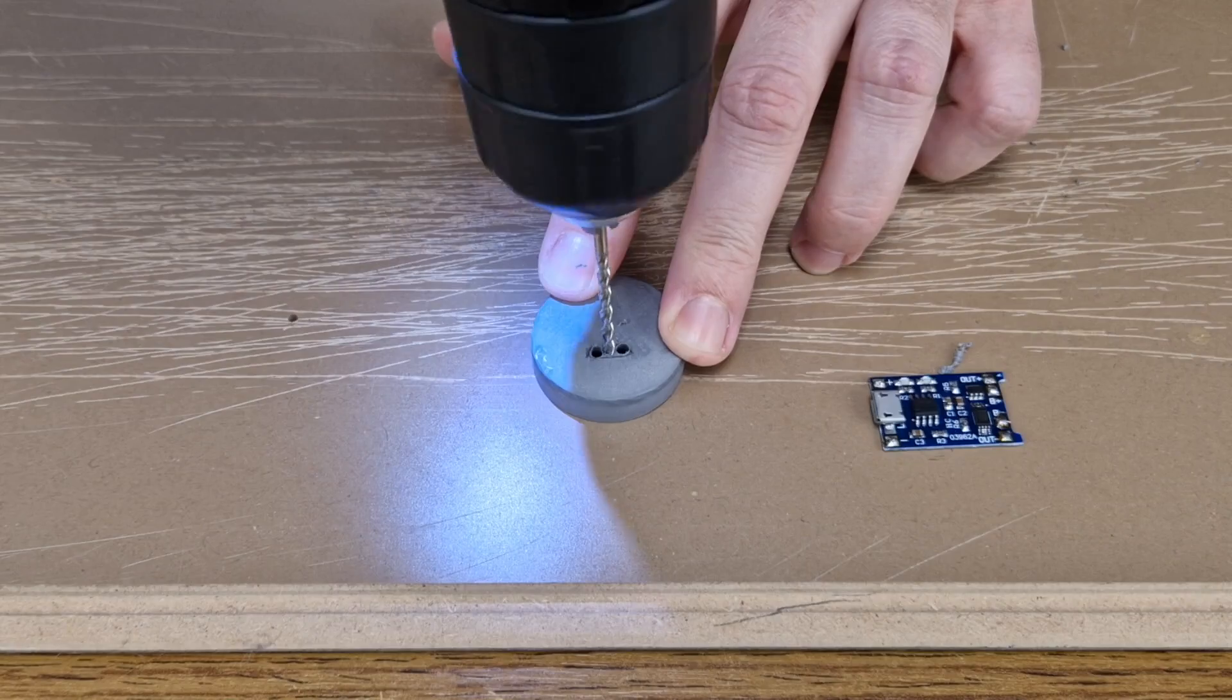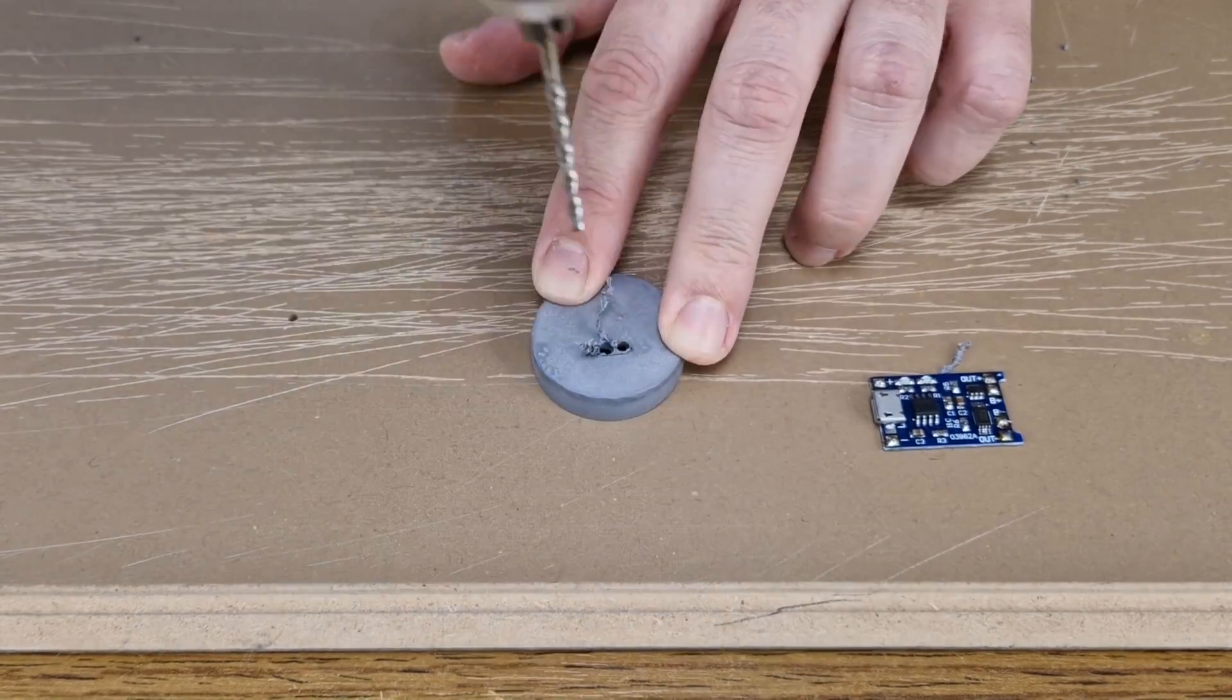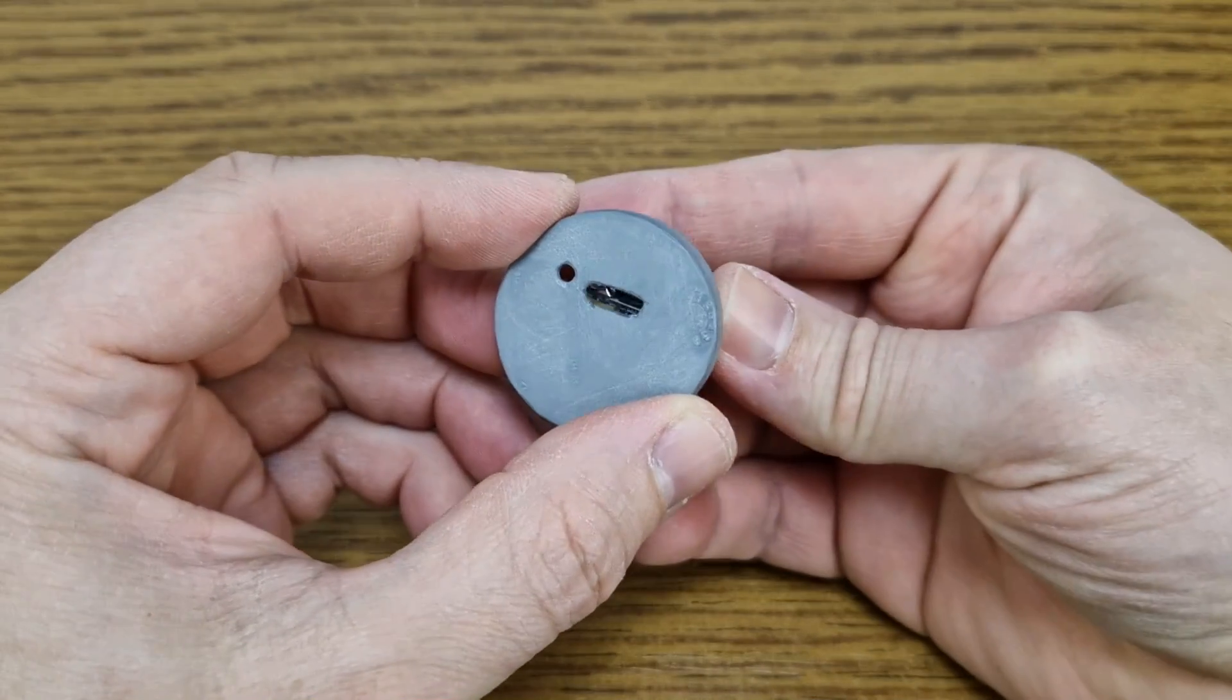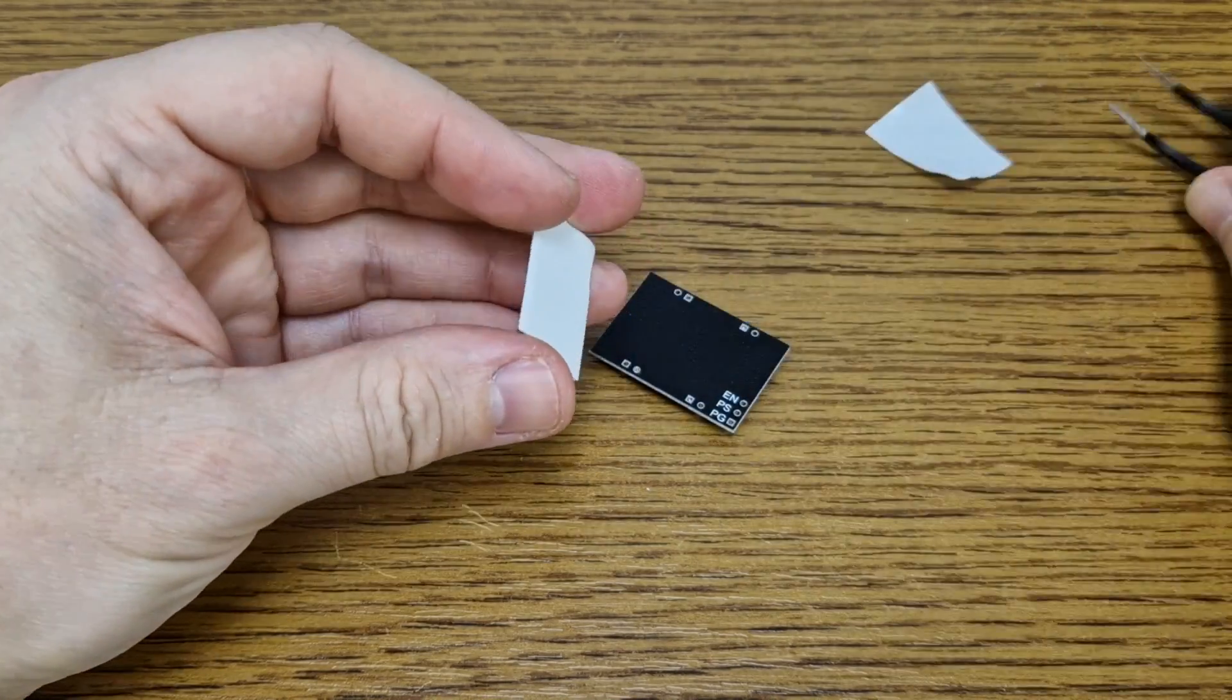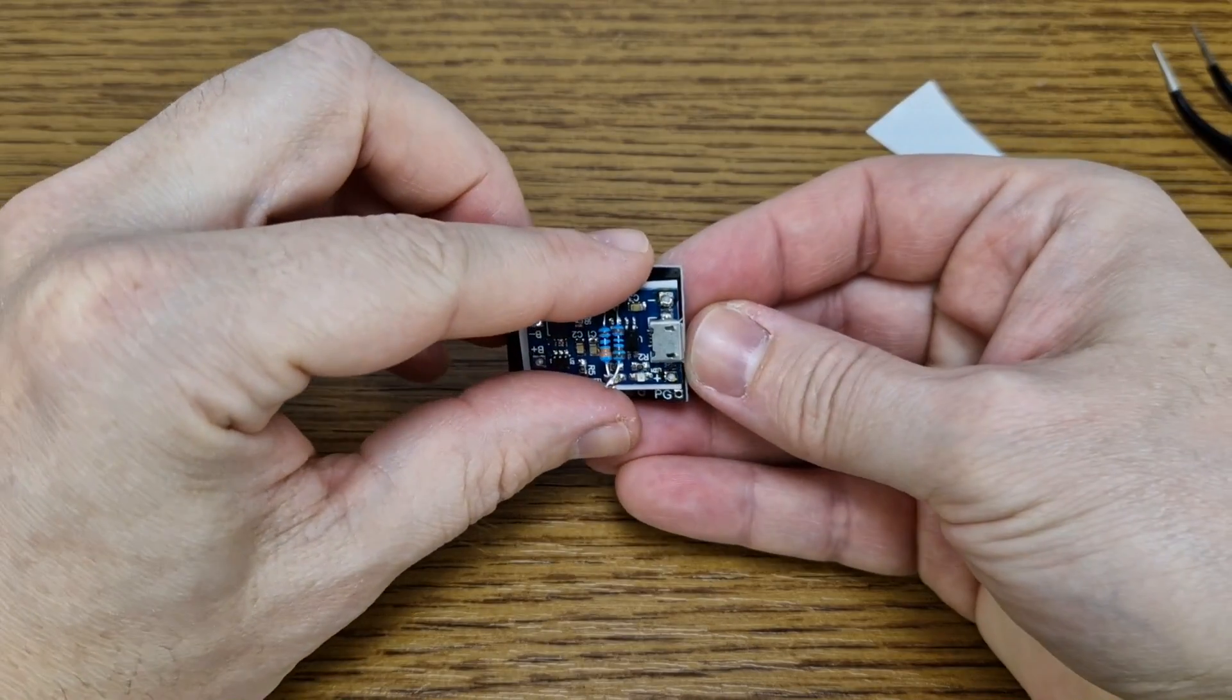I will mount the charging module in the back, so I need to make two holes for the charging port and LED. I will stick the converter to the charging module and mount both of them in the back.